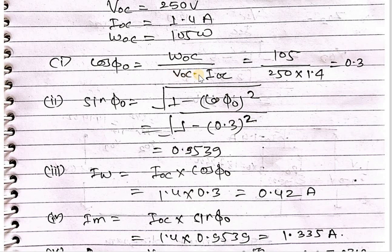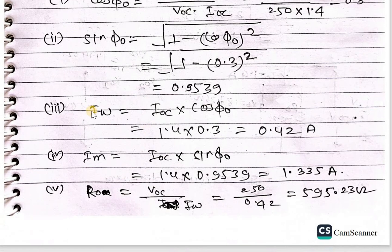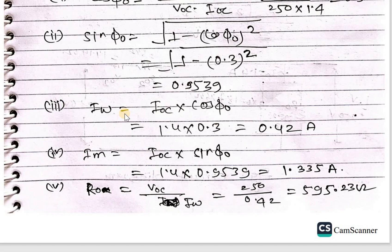Put the value of Voc, Voc and Ioc, you can get cos phi equals 0.3. From this value, sin phi equals root under 1 minus cos square phi, so 0.9539. Iw, that is working current, equals Ioc into cos phi, so 1.4 into 0.3, that is 0.42 ampere.